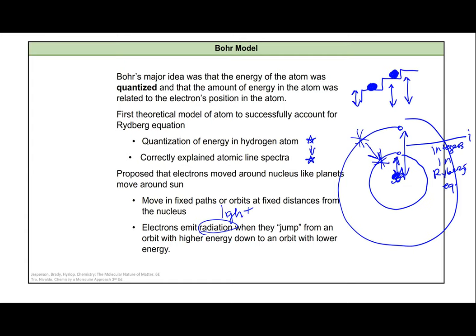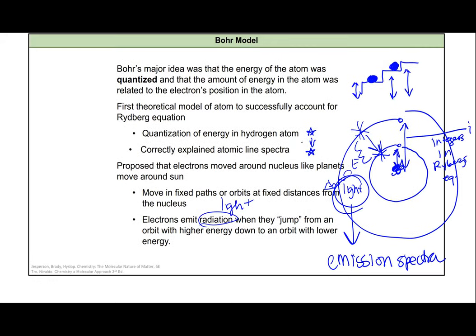If it's at an orbit higher in energy and it jumps down to an orbit lower in energy closer to the nucleus, the amount of energy between those orbits will correspond with the energy that's released as light by the electron, and that light is what we observe in our emission spectra. Here's a picture of that.